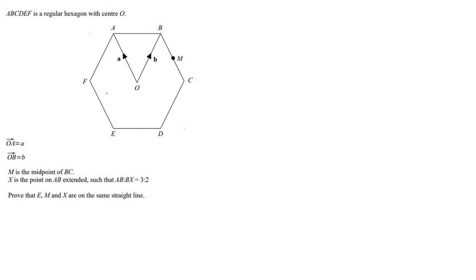Question two is getting a little bit trickier. ABCDEF is a regular hexagon with centre O. We're told the vector O to A is 'a', O to B is 'b', M is the midpoint of BC, and X is the point on AB extended such that the ratio AB to BX is 3 to 2. So we extend the line AB, and X is somewhere along that extension.